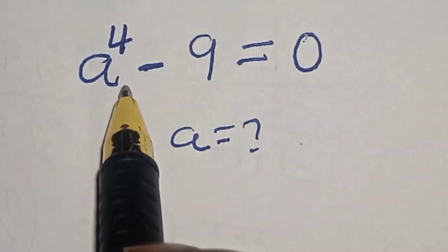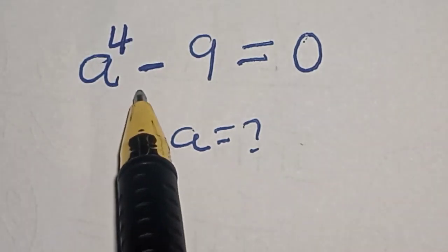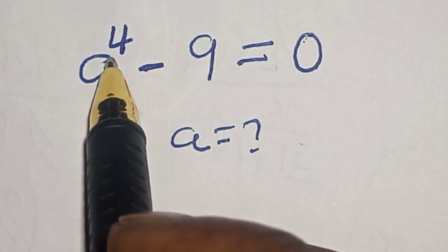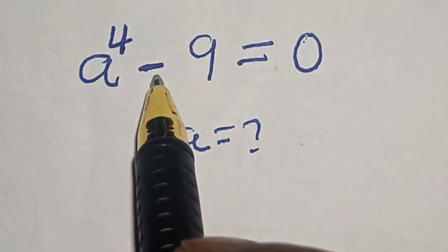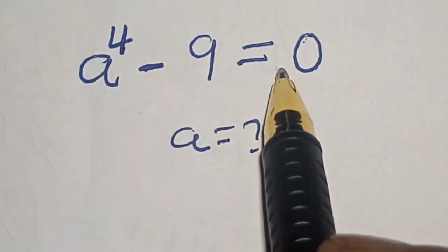Hello, welcome to MathGist. In this class, we want to find the value of a from this equation: a raised to power 4 minus 9 is equal to 0.